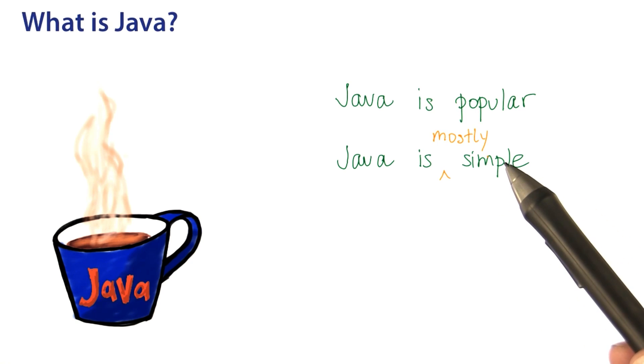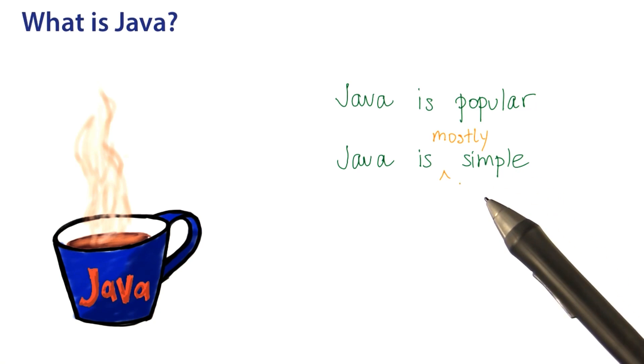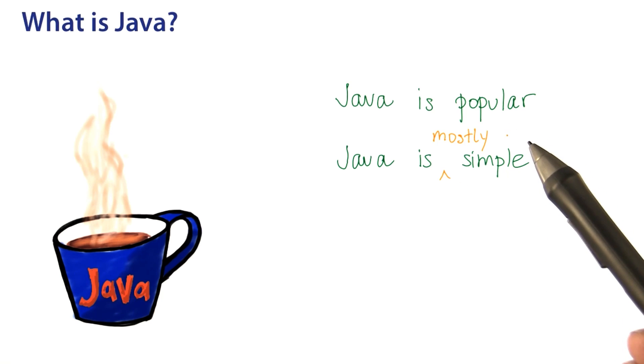For the most part, there are a few rough edges because Java was not designed as a training wheels language for students. It really is a real world programming language, but that's okay.